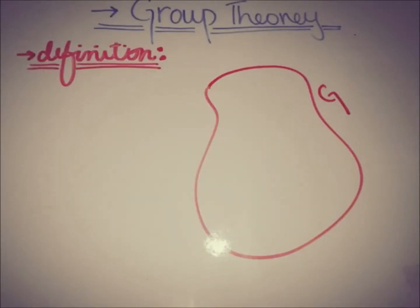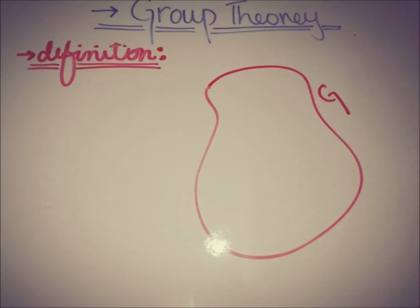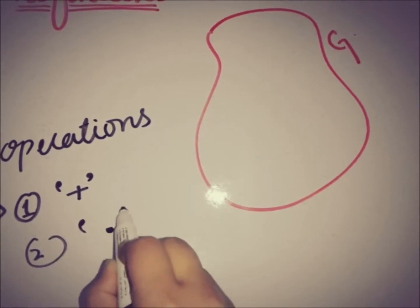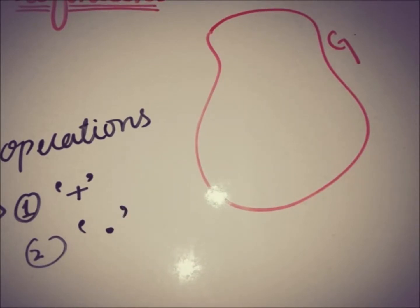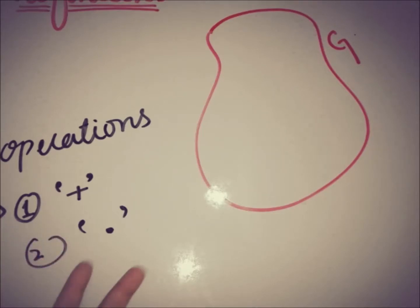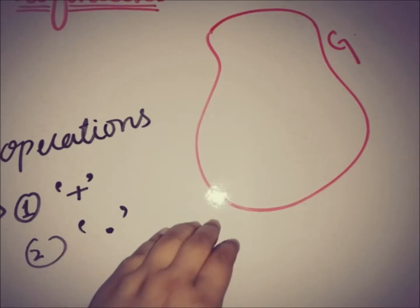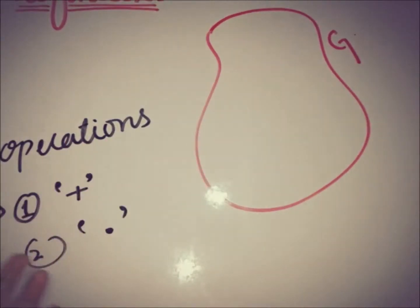Let's assume that we have a non-empty set G. As we have seen in vector spaces, there are mainly two operations: the first is addition, and the second is multiplication represented with a dot. Similarly in group theory, when defining a group we have to specify the operation. Here we will use the algebraic operation of multiplication, so we have a non-empty set G under the operation of multiplication.